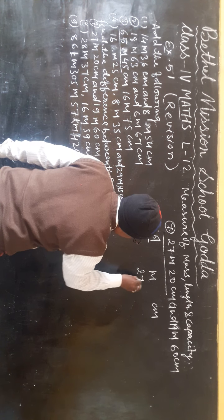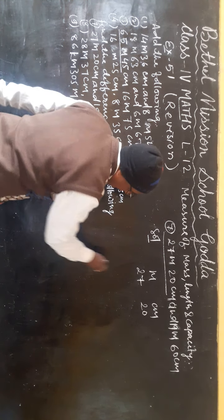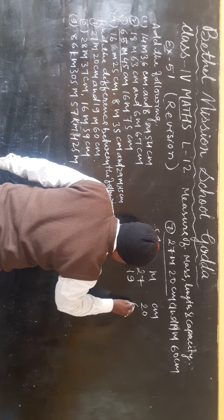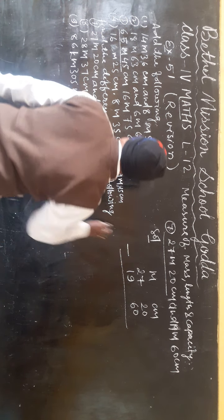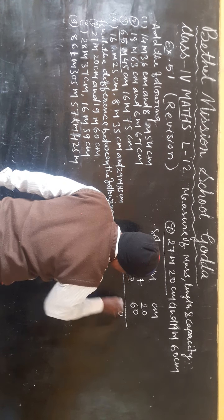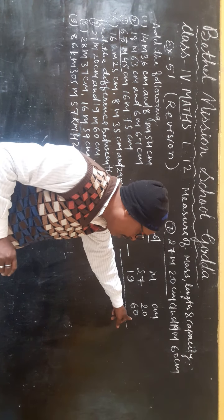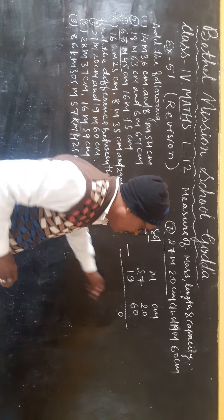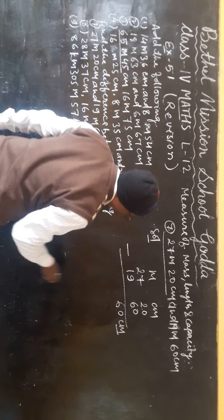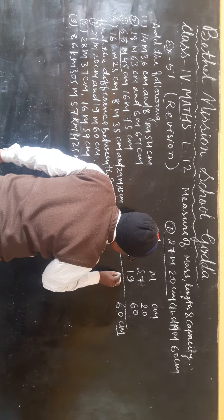Solution: meter and cm. 27 meter 20 cm minus 19 meter 60 cm. 0 minus 0 is 0. 2 minus 6 — borrow — 12 minus 6 is 6. That is 60 cm. 16 minus 9 is 7 meter. Answer: 7 meter 60 cm.